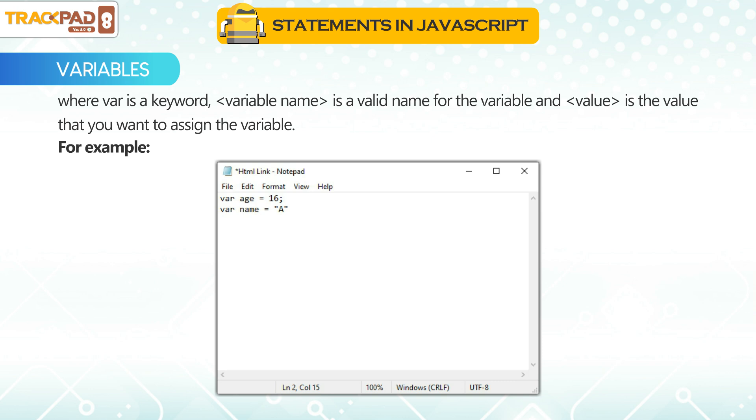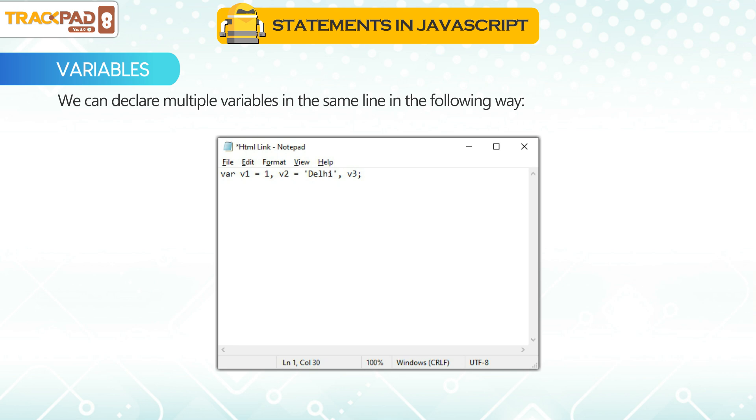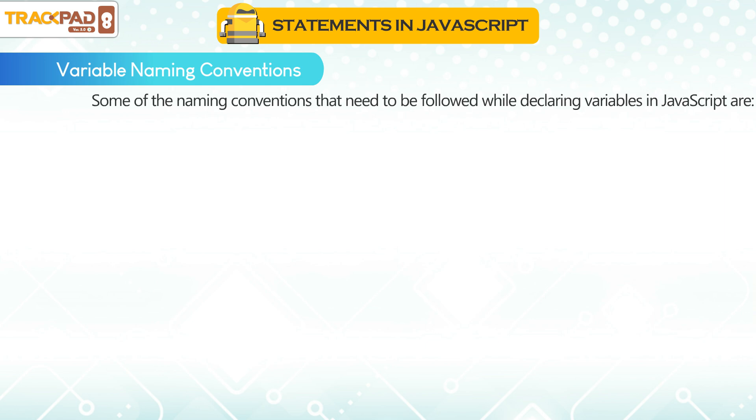For example, we can declare multiple variables in the same line. Variable naming conventions must be followed while declaring variables in JavaScript.